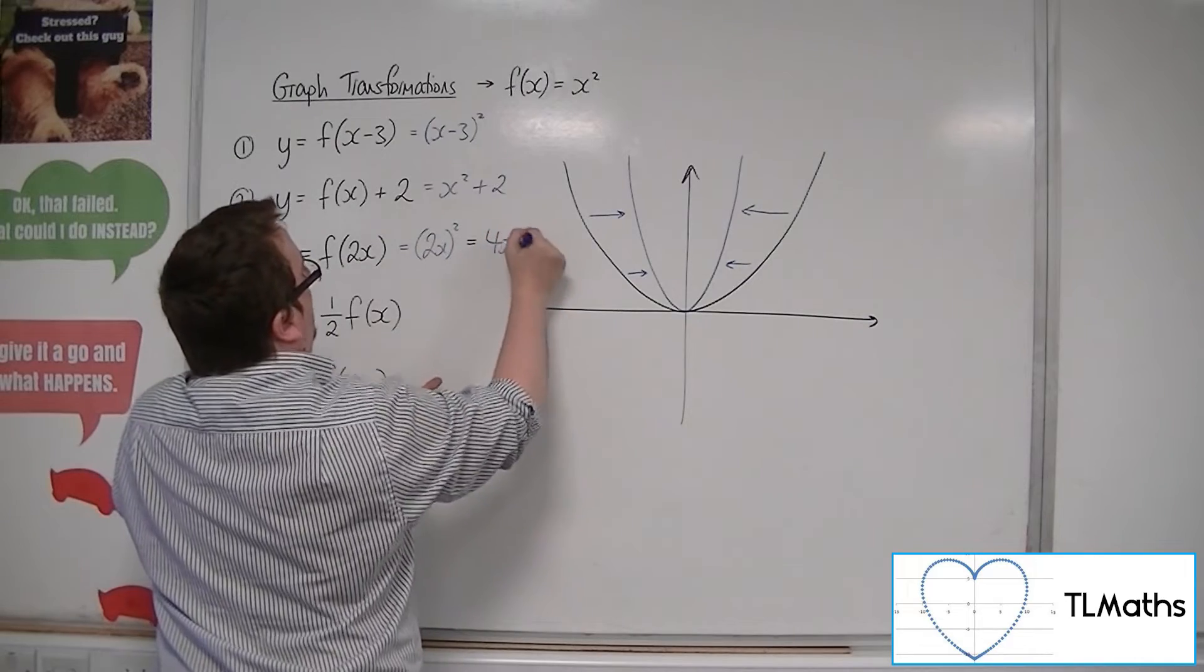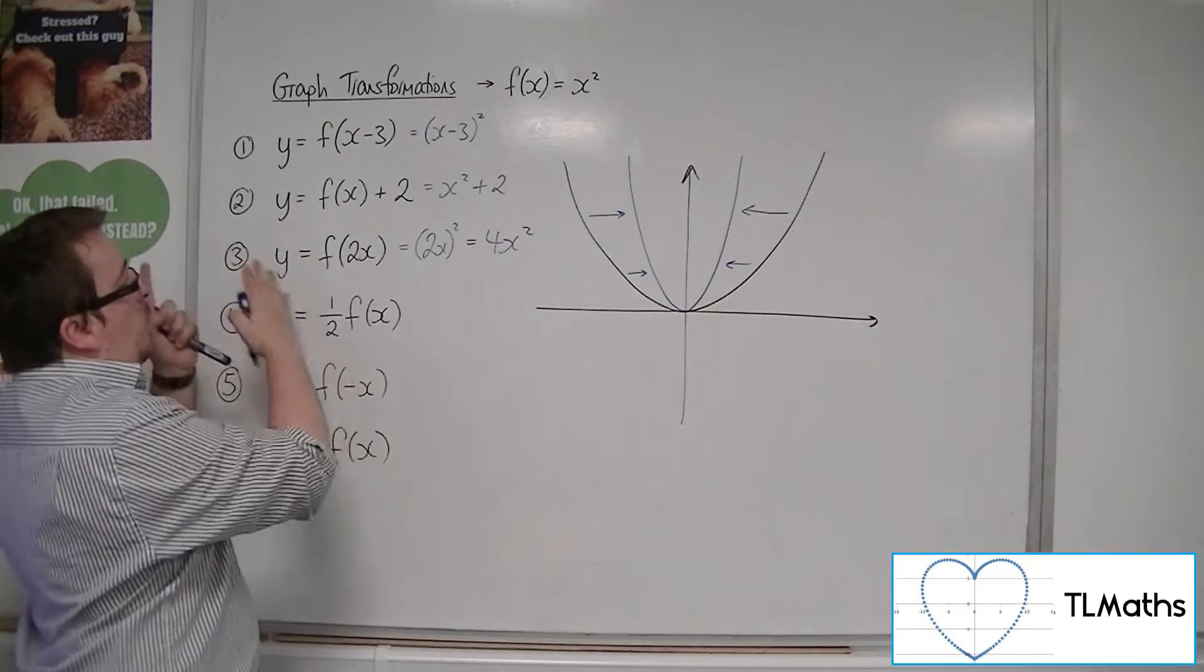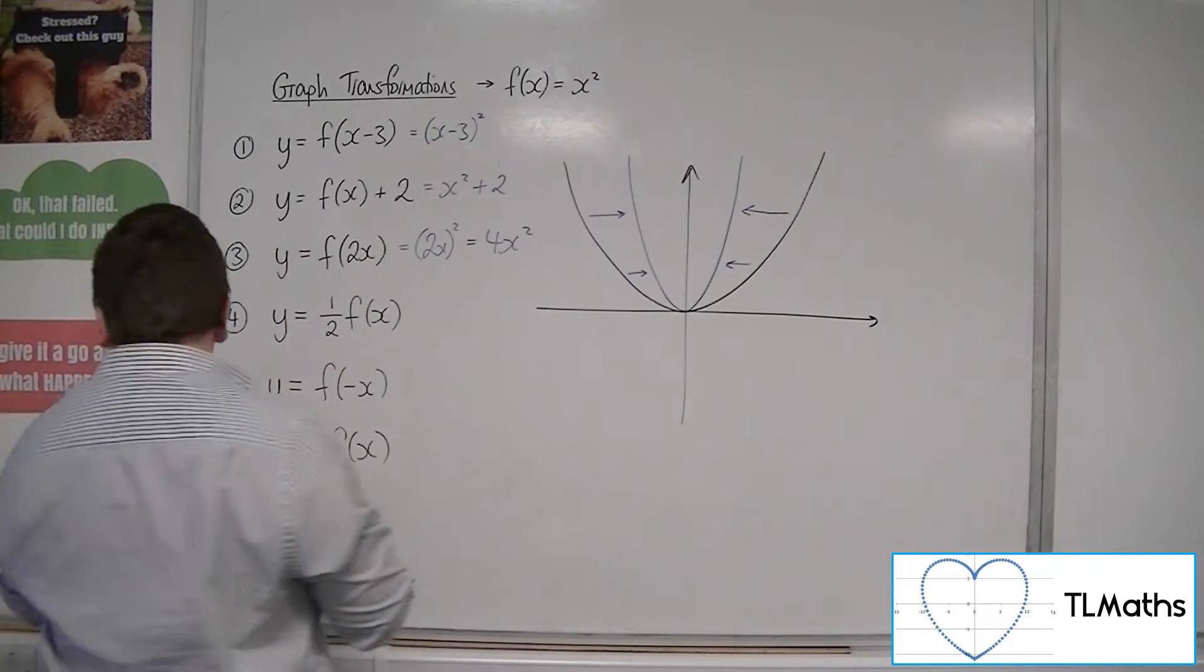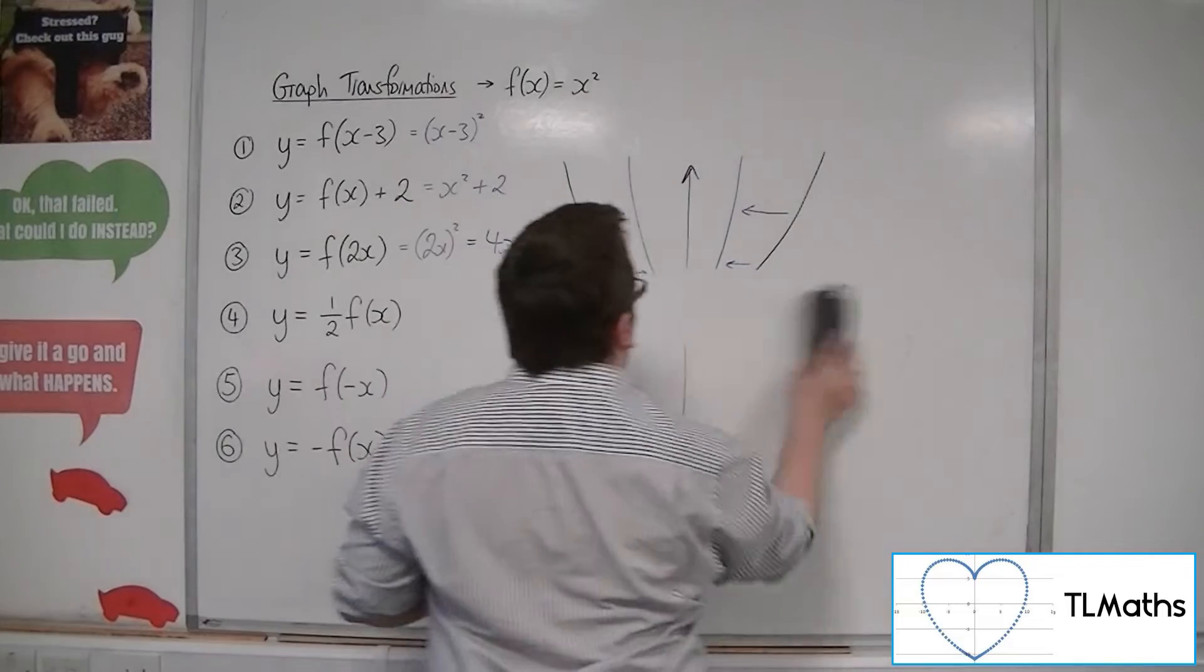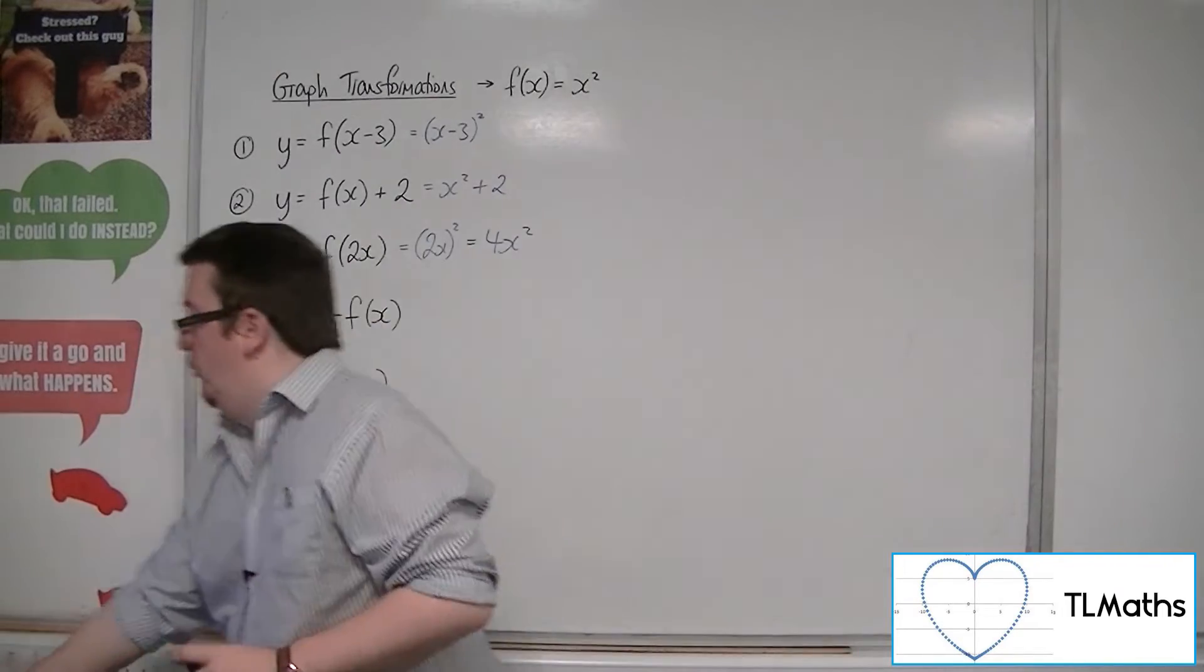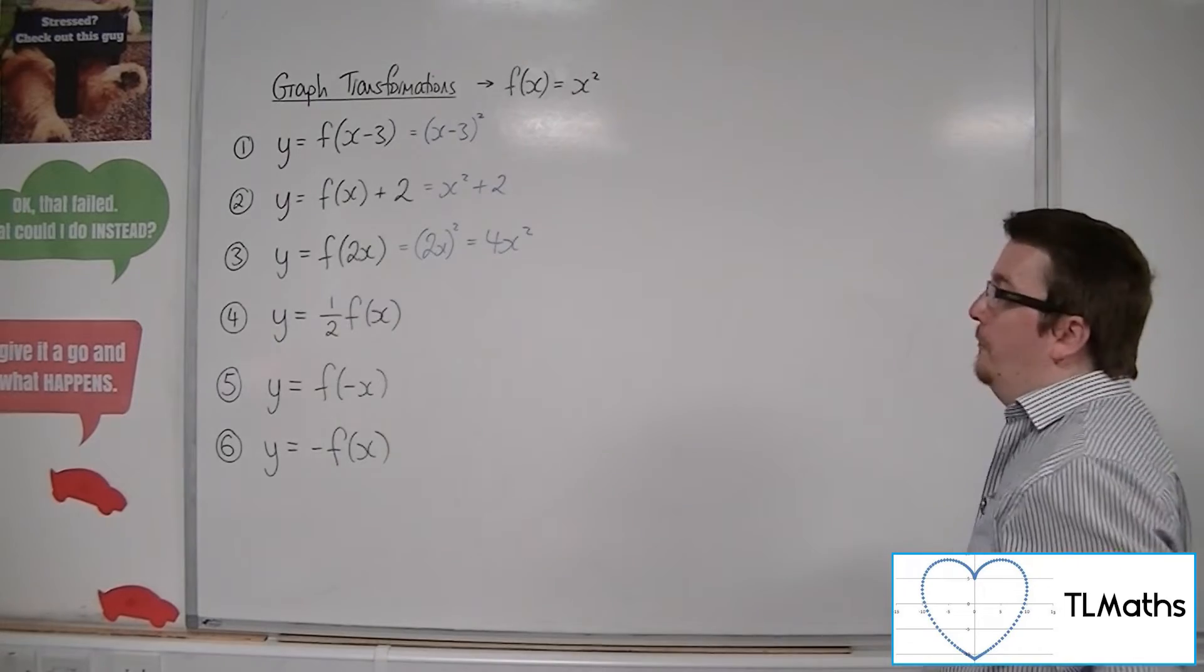And so we get 4x squared. So y equals 4x squared would be this new curve. Let's look at this next one, number 4. Y equals a half f of x.